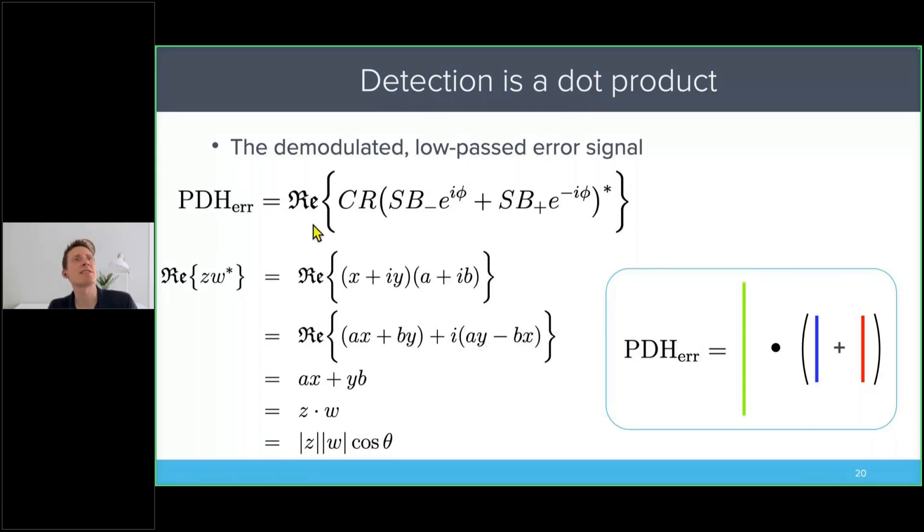This expression, the first expression on the slide, is the expression for the Pound-Drever-Hall error signal. It's the real part of the carrier multiplied by the lower sideband plus the upper sideband conjugated.